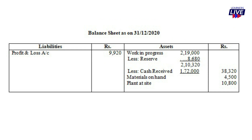For the balance sheet, the work in progress total is $219,000. Less work in progress reserve of $8,680 gives $210,320. Less cash received of $172,000 gives a net amount of $38,320 shown as an asset. Materials on hand ($4,500) is shown as closing stock on the asset side. The closing plant balance after depreciation is also recorded on the asset side.